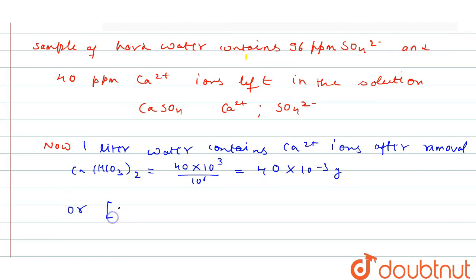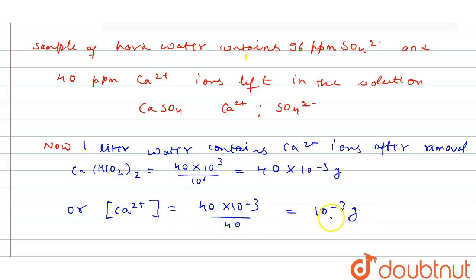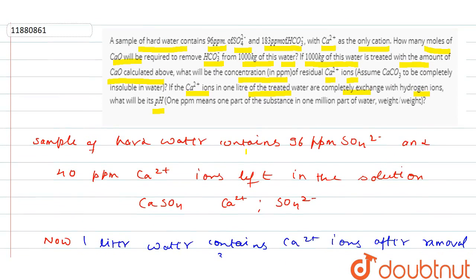Now, if you write the Ca²⁺, how much will it be? 40 into 10 to the power minus 3 divided by 40 — this will be 10 to the power minus 3 moles. Now let's see our Ca²⁺ ions. This is our 1 liter treated water completely exchanged with hydrogen ions.